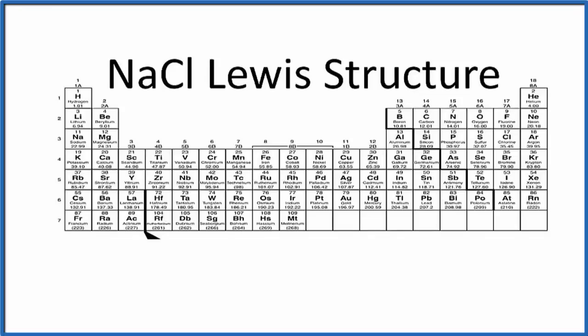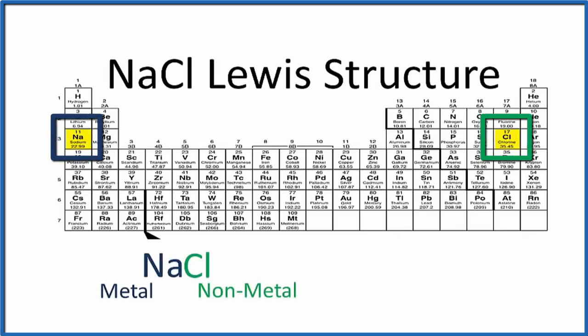In order to write the Lewis structure for NaCl, we need to realize first that sodium is a metal and chlorine is a nonmetal. That means we'll have an ionic compound.